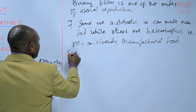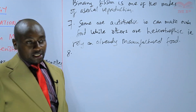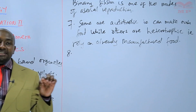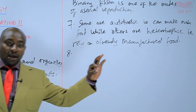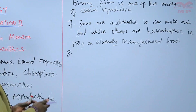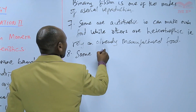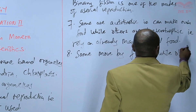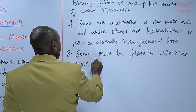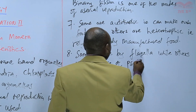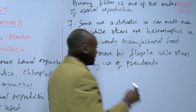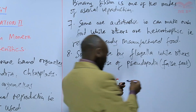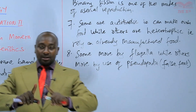The next characteristic is in terms of movement, also known as locomotion. How do bacteria move? There are two ways in which bacteria move. Some have what we call flagella, which is a locomotory structure — a structure used for movement. While others have what is called pseudopodia. Pseudopodia is also known as false feet; they form some false feet. Flagella is as shown in the diagram — there are some structures used for movement.